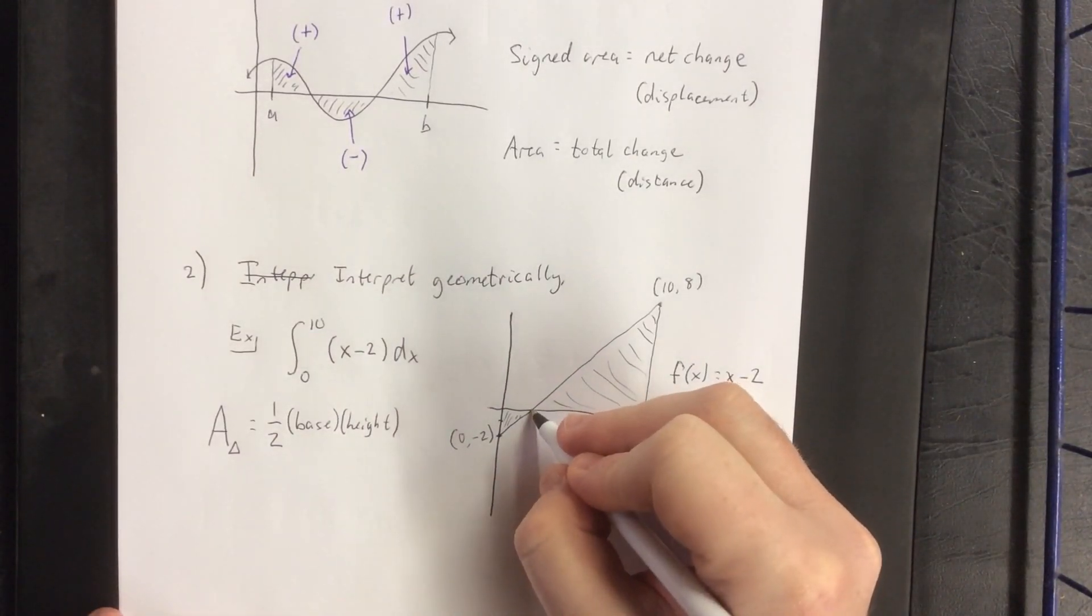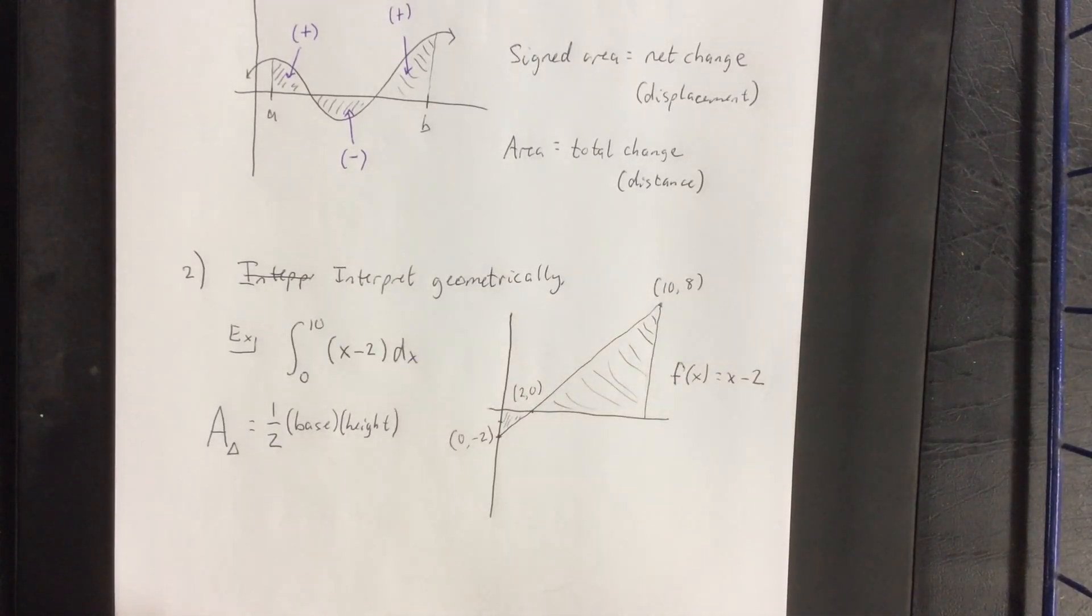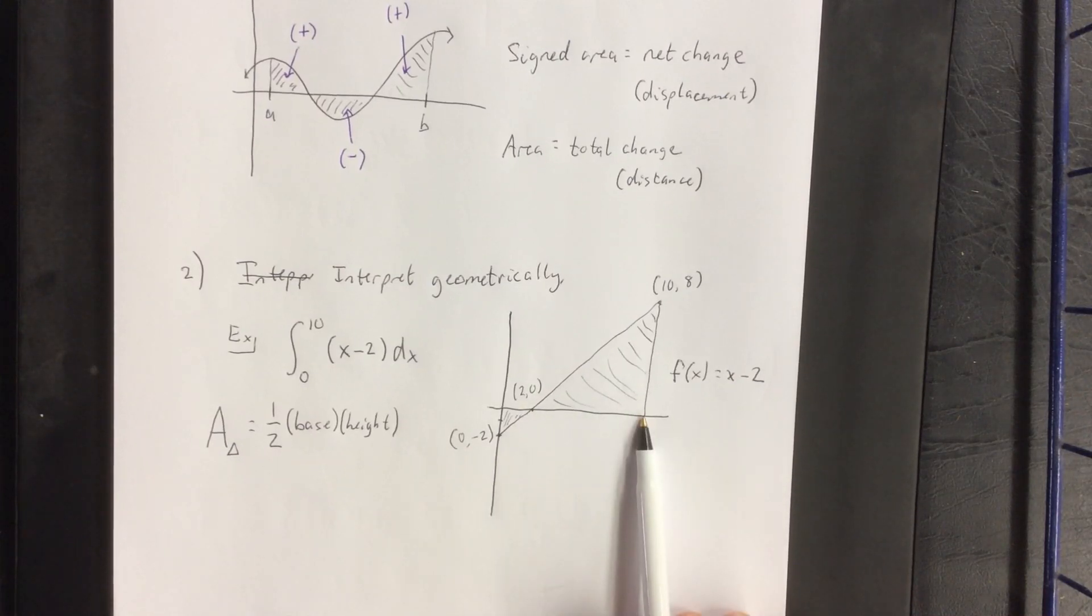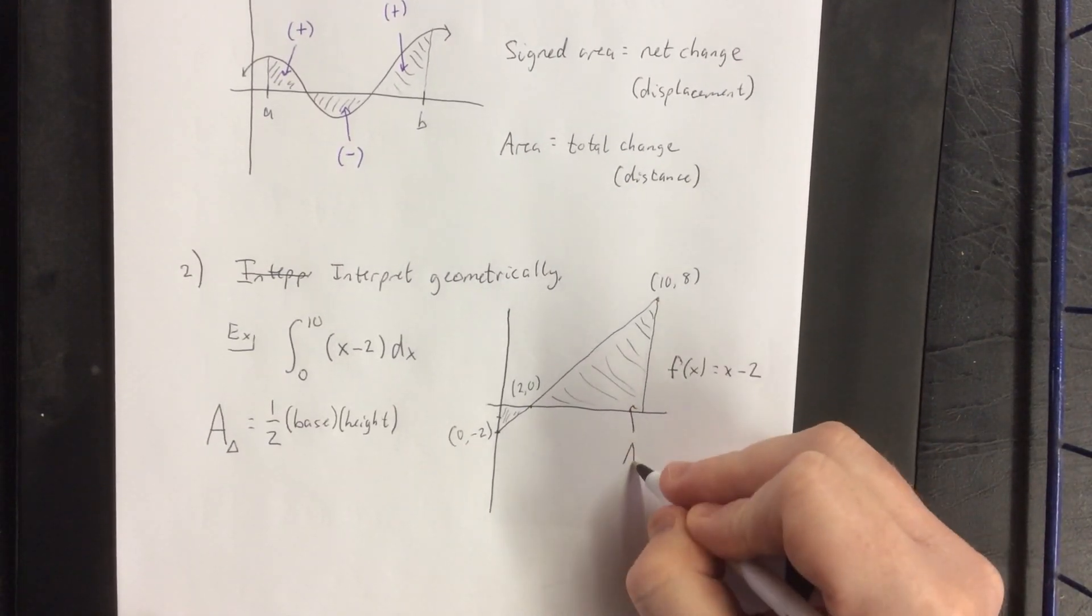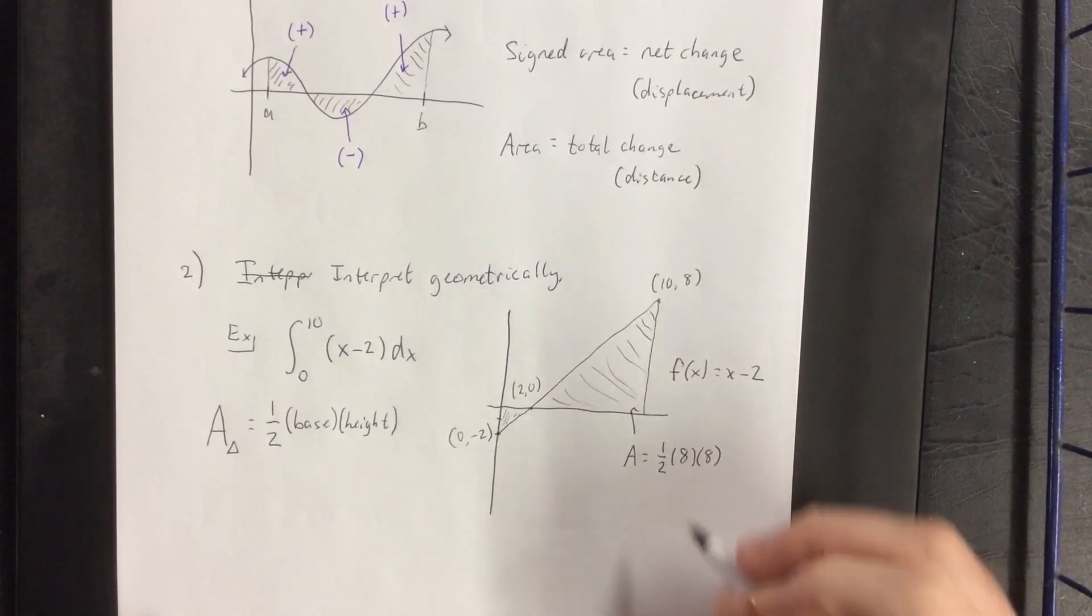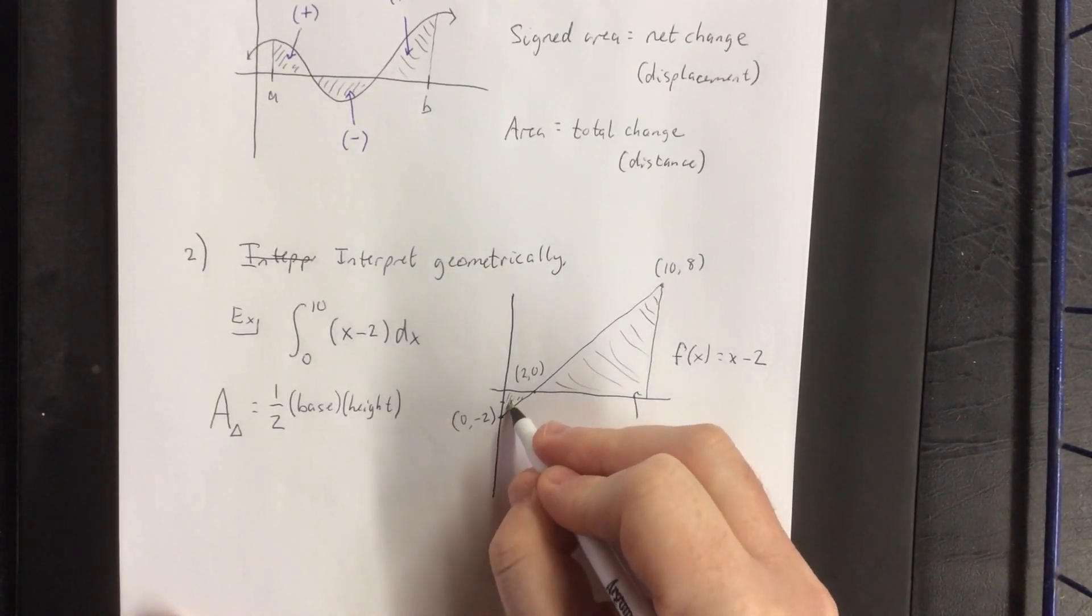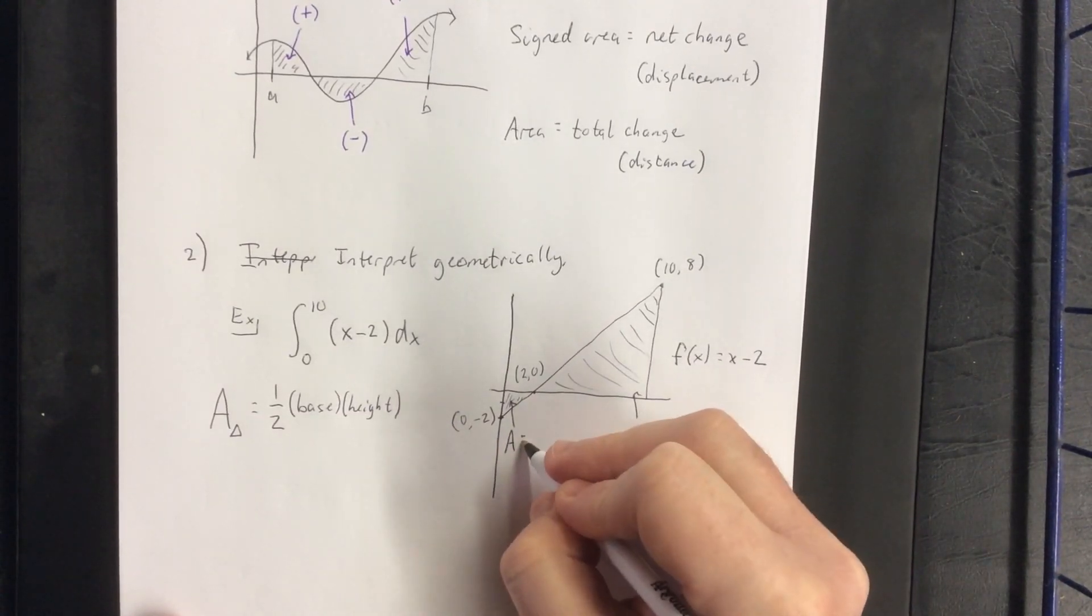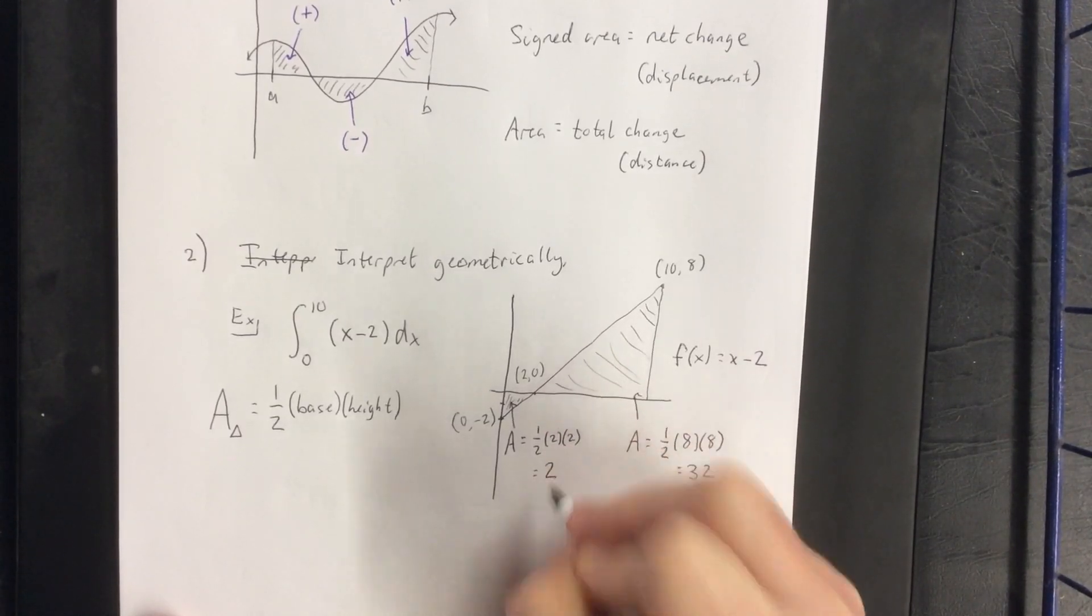Now the x-intercept for this line would be at the ordered pair 2-0, meaning that for our large positive triangle, we have a base of 8 and a height of 8. So this area is going to be 1 half times the base times the height of 8, which overall is equal to 32. And for this little negative triangle right here, the area is going to be equal to 1 half times the base times the height, which would be 2.